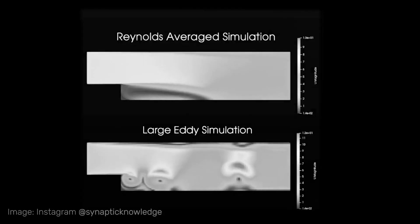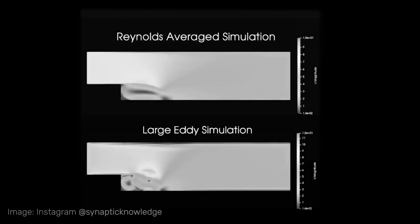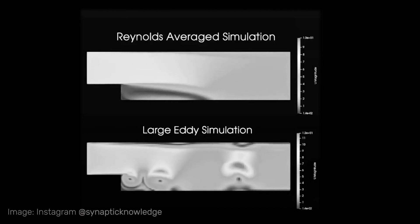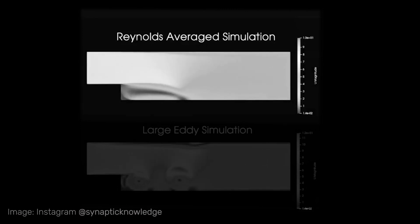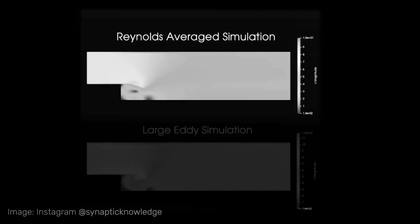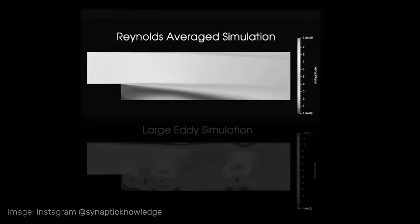This video shows identical turbulent flow conditions solved with two different solvers, or methods. The first describes the average wind field, called RANS — for Reynolds-Averaged Navier-Stokes — or low-fidelity simulation.